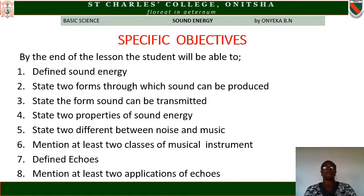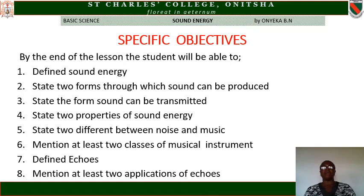Specific objectives: by the end of the lesson, the student will be able to: one, define sound energy; two, state the form through which sound can be produced; three, state the form sound can be transmitted; four, state two properties of sound energy; five, state two differences between noise and music; six, mention at least two classes of musical instruments; seven, define echo; eight, measure at least two applications of echo.